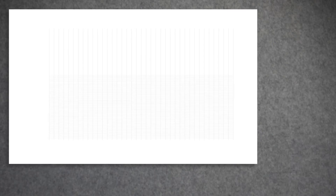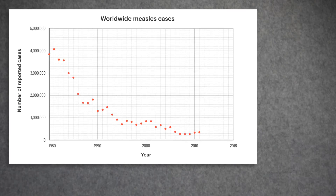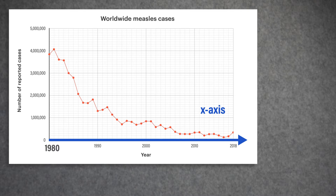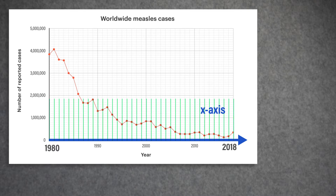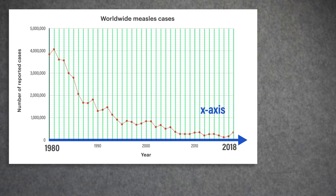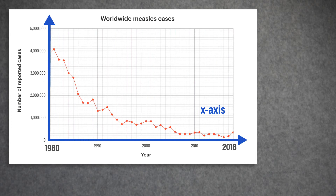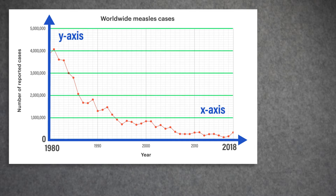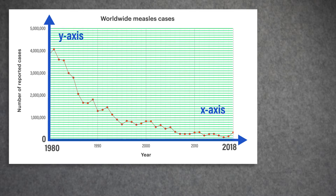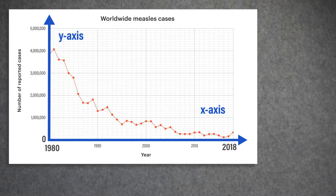Take a look at this line graph of worldwide cases of measles. Time in years is shown horizontally on the x-axis. We can see that this graph starts in 1980 and goes up to 2018, with a grid line for each year. The number of measles cases is shown vertically on the y-axis. It starts at zero, with main grid lines going up by one million, and smaller grid lines going up by 100,000. These will help us read off values from this graph.